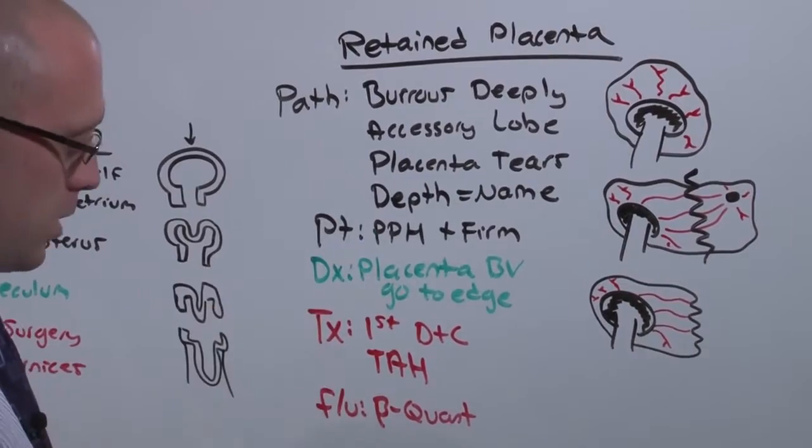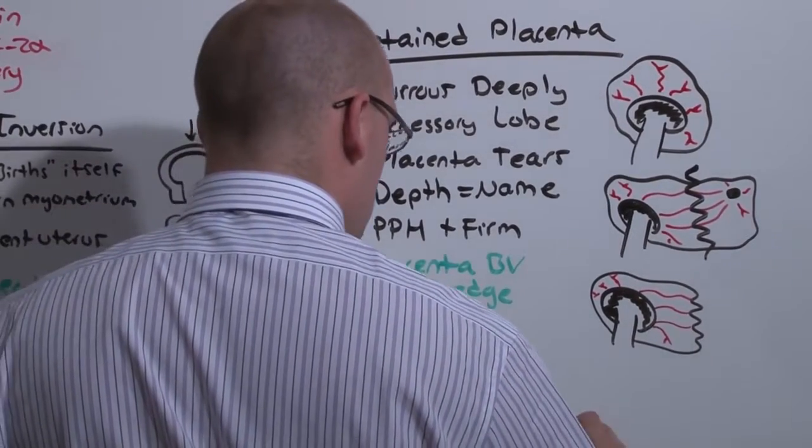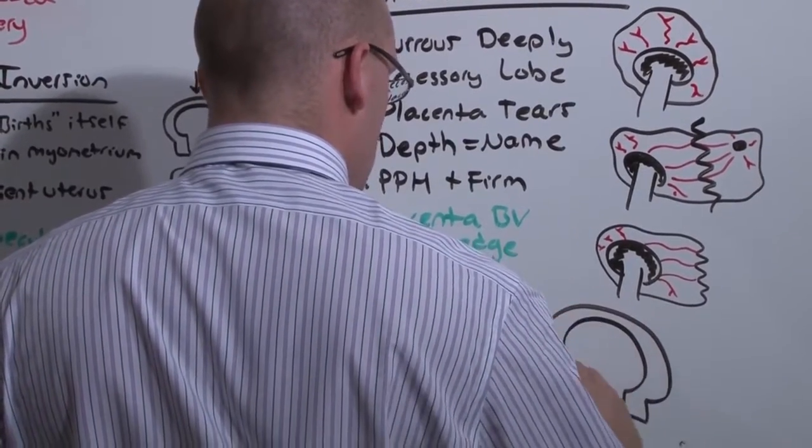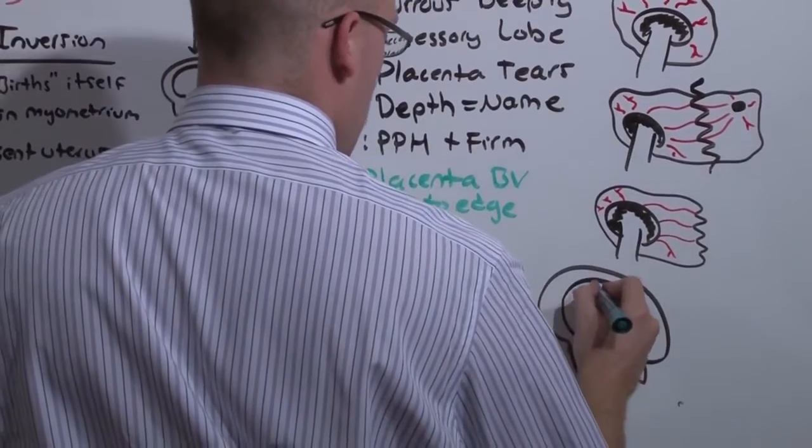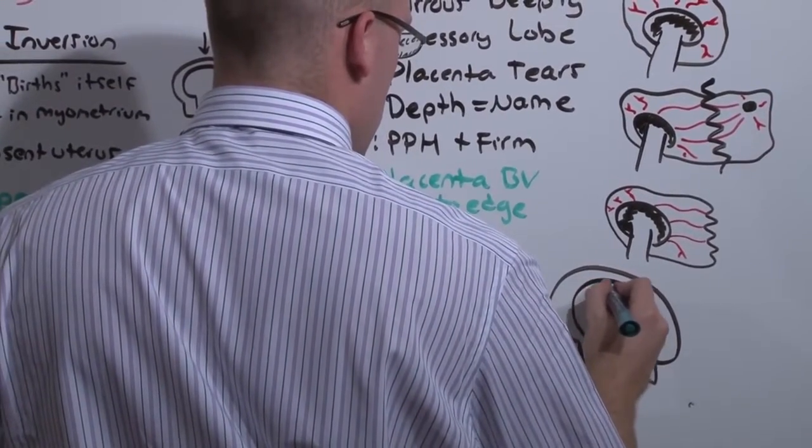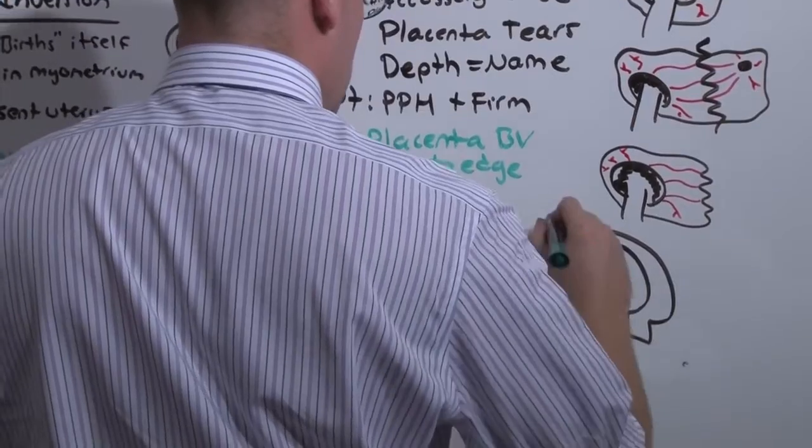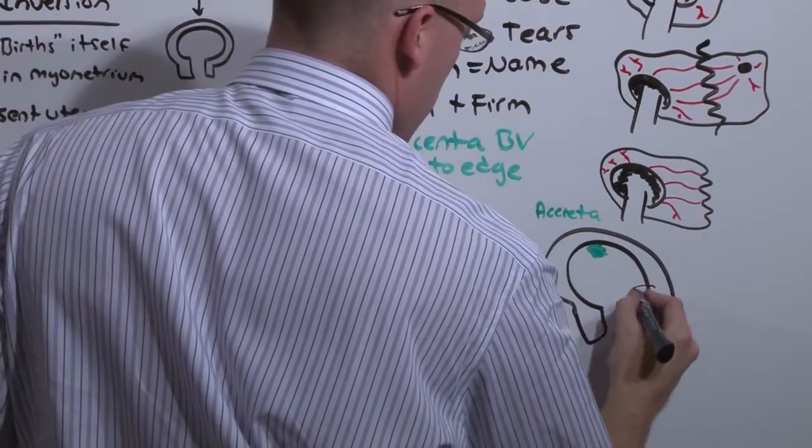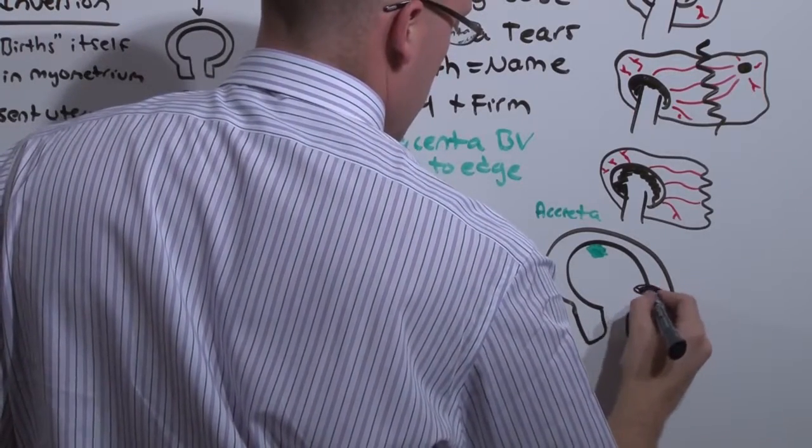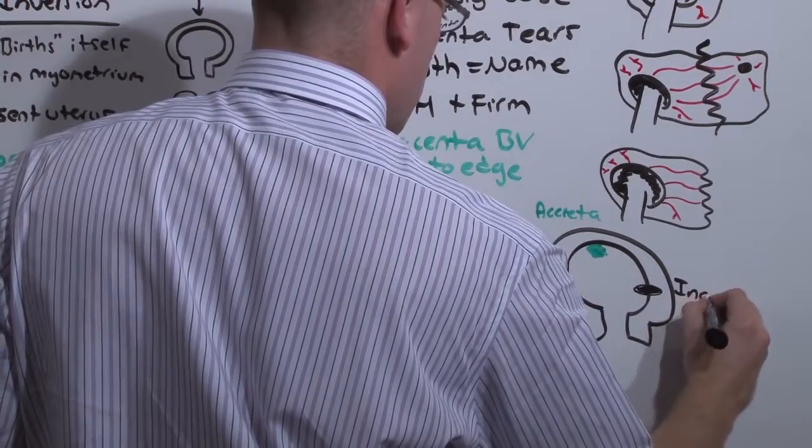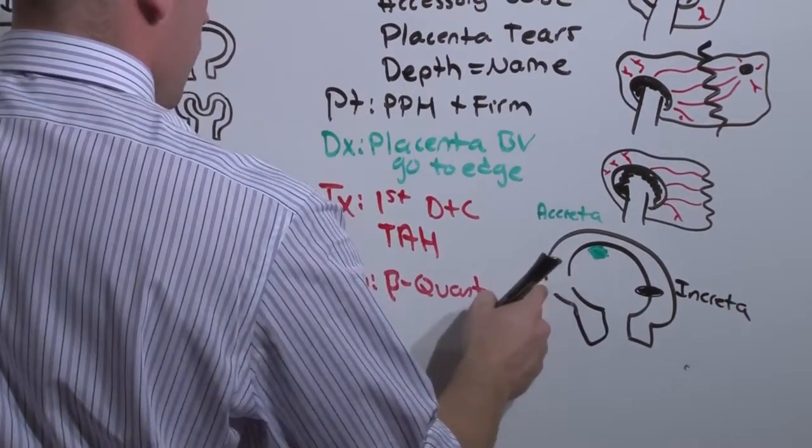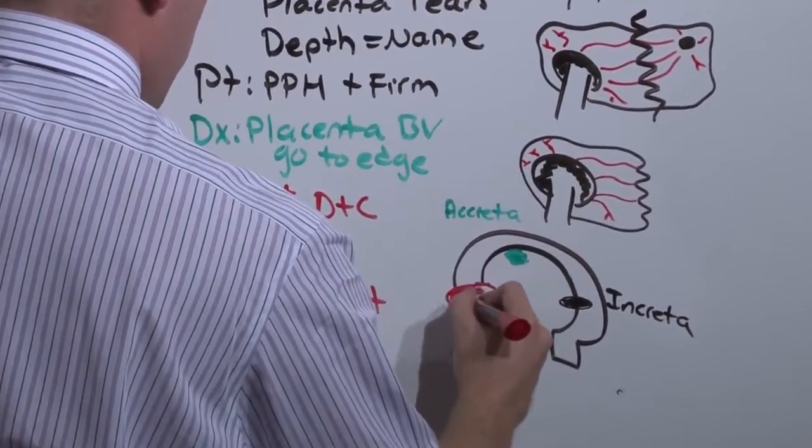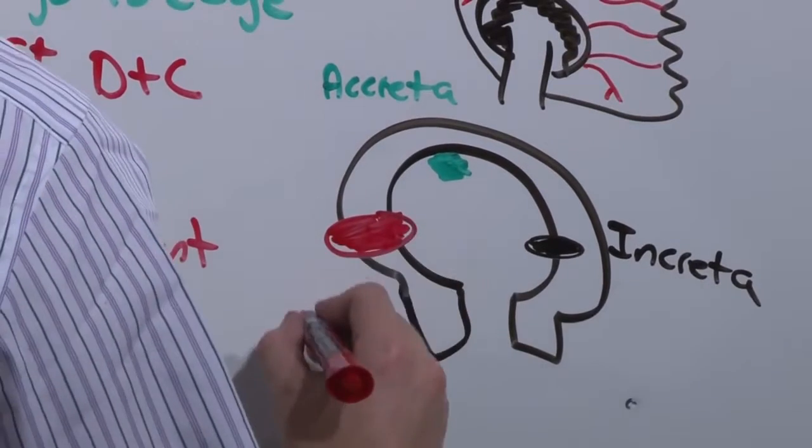Now the depth is how you name it. What does that mean? Here's the uterus, the myometrium, and the serosa on the end. If you have an endometrial lobe, it's called a creta. If you have it burrowing into the myometrium, it is called increta. And if you have it burrowing all the way through to the serosa layer, percreta.